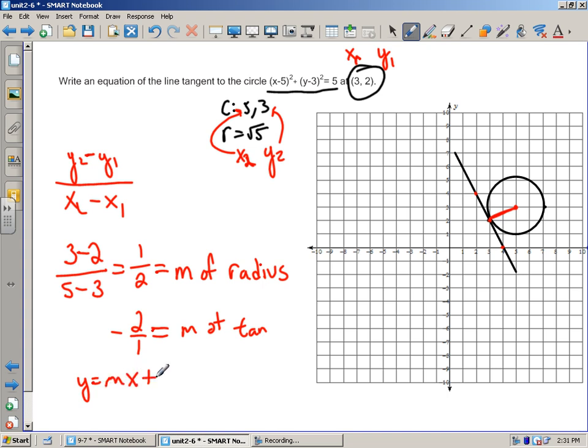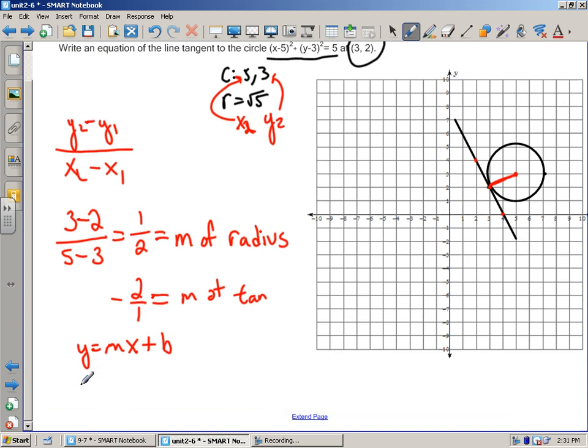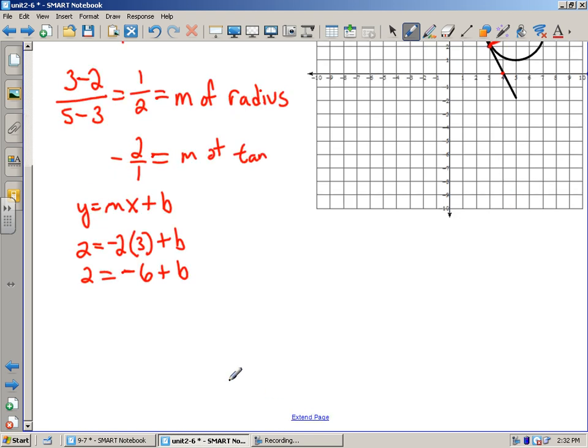We've got a y coordinate of 2, which I'm getting from right here, an x coordinate of 3, and my slope is -2. So 2 = -2(3) + b.